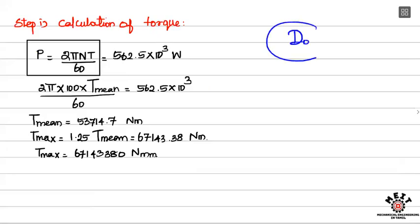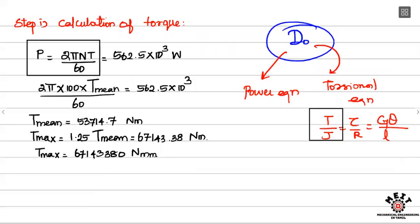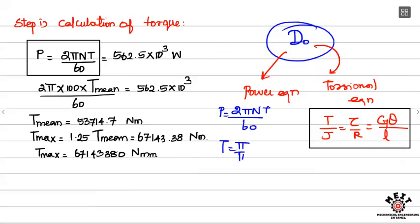We have two ways to solve this. One is using the power equation P = 2πNT/60, from which we get the torque formula. The second one is using the torsional equation T/J = τ/R = Gθ/L. These are the two approaches we will use.